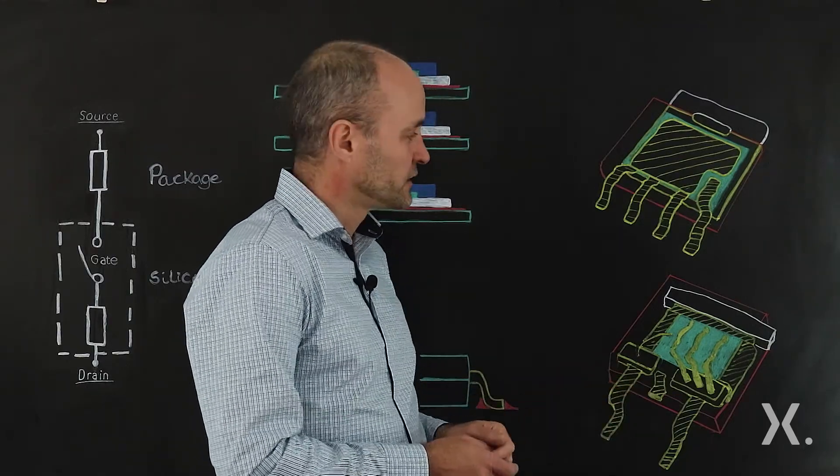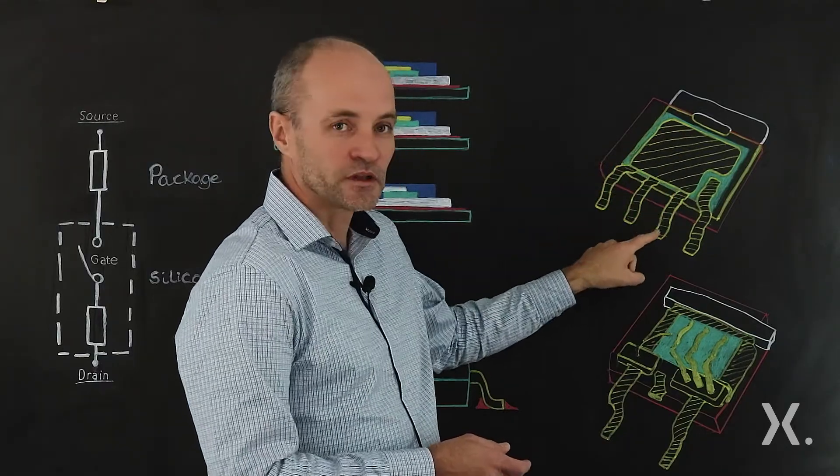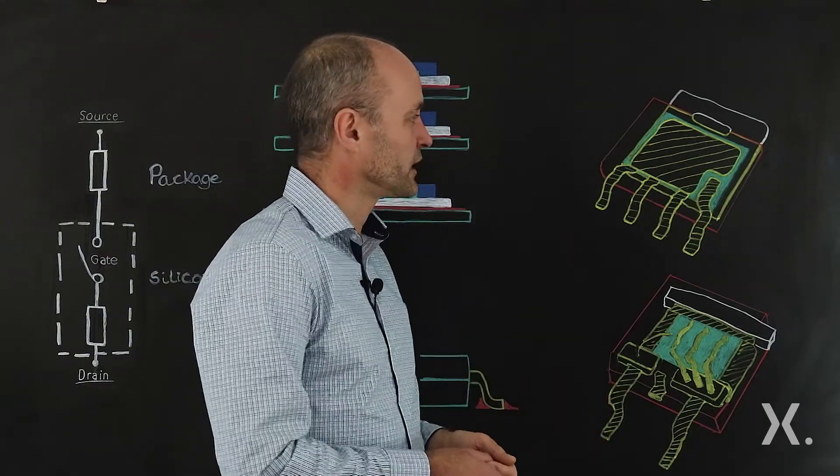D2PAC, the leads coming out of the package are quite long, which is a big contributor to the inductance of the device but also the resistance. In the case of AlephPAC, we only have short leads, but we also have three for the source connection rather than just the one we had on D2PAC.